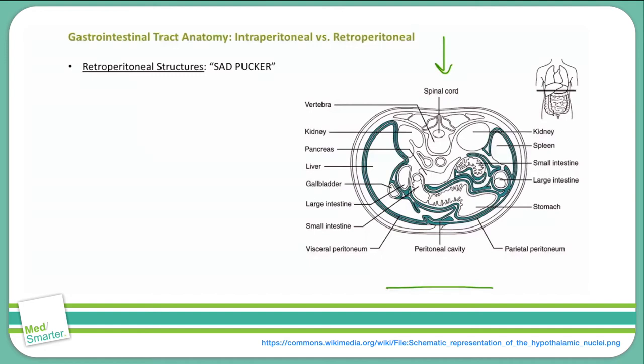The S stands for suprarenal glands, which is another name for the adrenal glands. The A is for aorta and naturally also the IVC, which is located in close proximity. Remember, any artery that branches off the aorta — for example, the renal arteries or common iliac — are also in the retroperitoneal space.